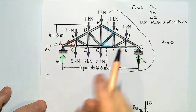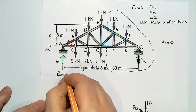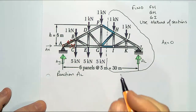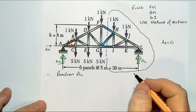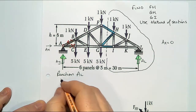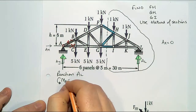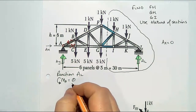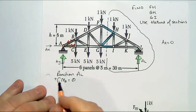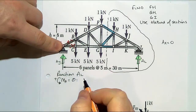So to work out what AL is, I'll have a reaction. And if I take moments around A, it will be zero. Say that everything going around anti-clockwise is going to be positive.